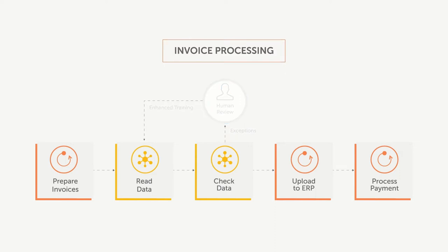The first step is preparing invoices. An RPABot collects email attachments into one folder and another RPABot uploads them into Cognitive IQBot. IQBot extracts data from invoices and after validation, saves it to a CSV file. If some data fields don't pass validation, they will be reviewed by a human operator, and these corrections will be used as additional training data.